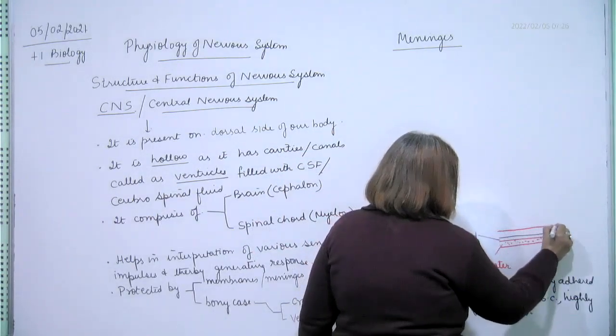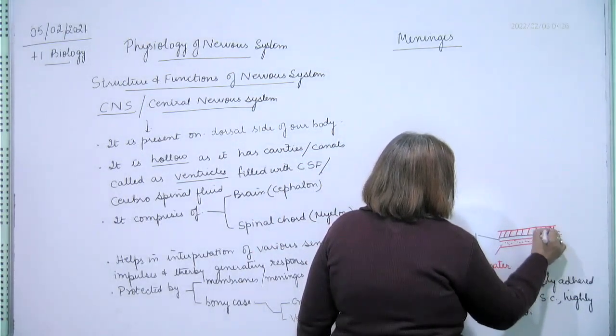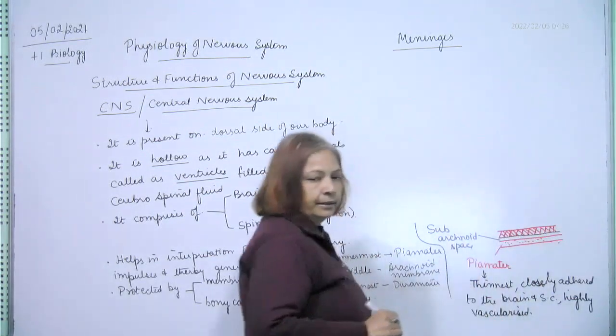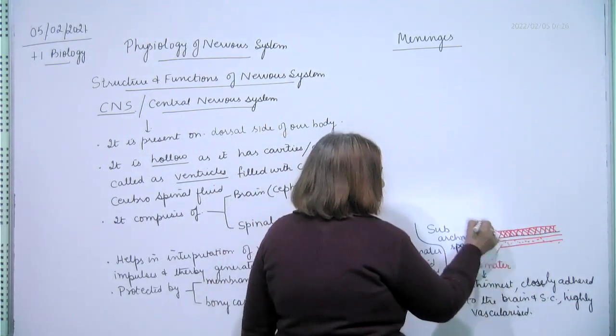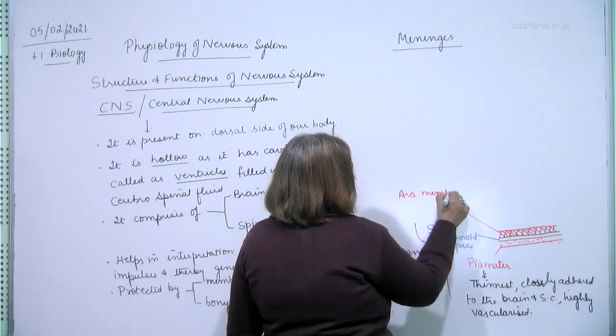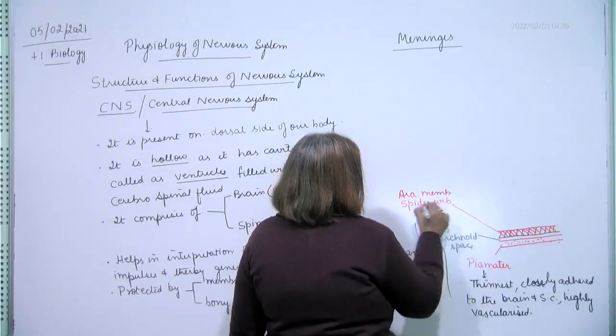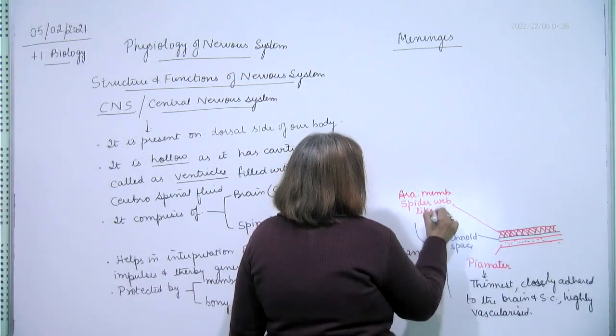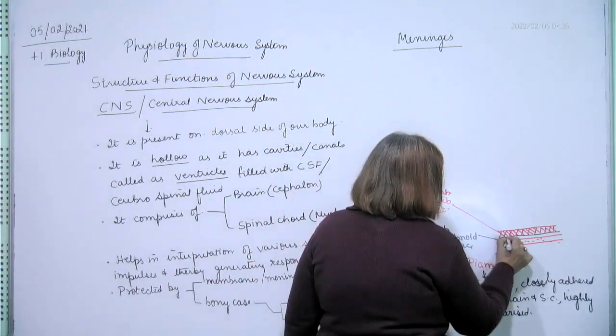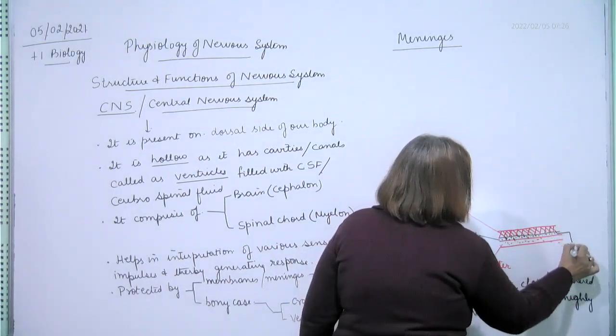And this is arachnoid membrane. Arachnoid term came from spider, spider is arachnoid, so this is a spider web-like structure, this is arachnoid membrane. This is a spider web-like structure. This is the sub-arachnoid space, it is a fluid field space, it is cerebrospinal fluid, CSF.